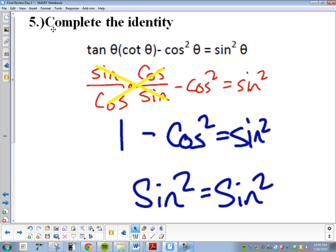Remember some of our basic rules when we did this. We always wanted to foil or distribute first. If you have squares and ones, then we're thinking about our Pythagorean identities. Those are on the back side of your unit circle if you need them.